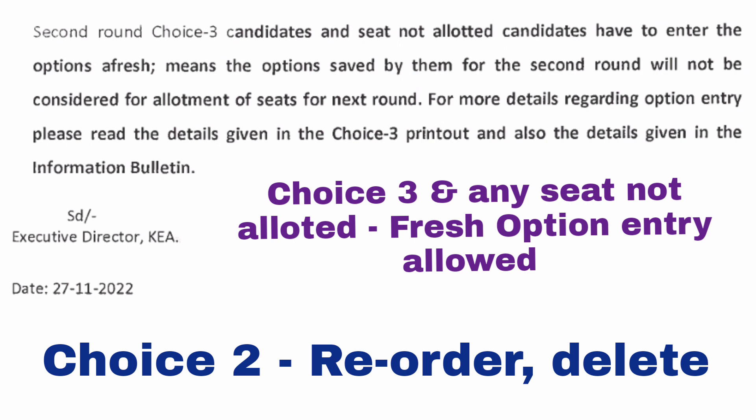The choice two students who are going to do choice two in this round cannot do a fresh option entry. All students who do choice two after today's result will have to enter the second extended round with the same set of option entries which they have done in the second round. What they can do is only edit by reordering and deleting, but choice two students cannot add any new college.